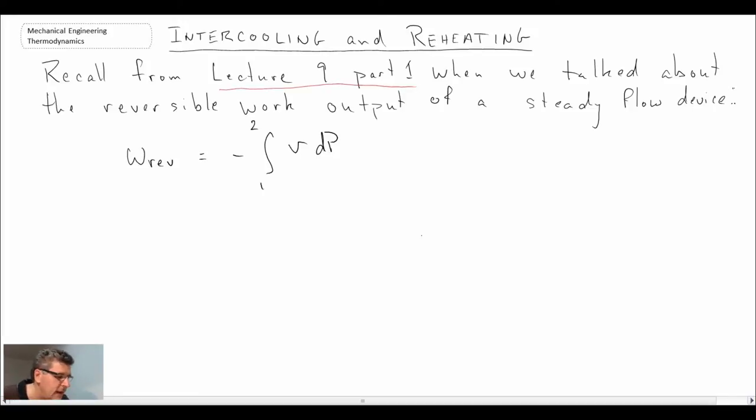We had ∫v dp and that was reversible work. So if we have a process whereby we're either doing compression or expansion, we can either minimize the amount of work that we have to do in compression or maximize the amount of work being produced by playing with the specific volume in this equation.